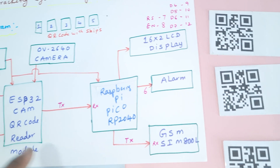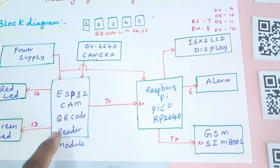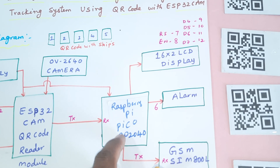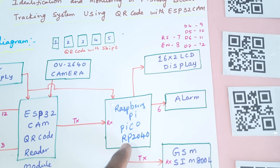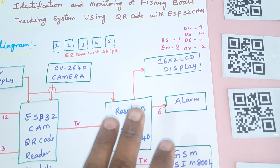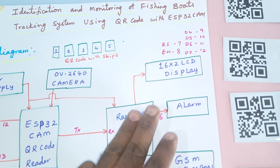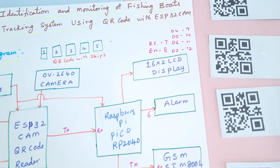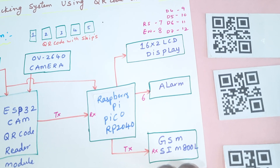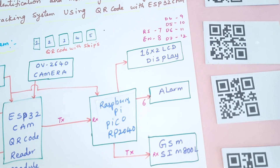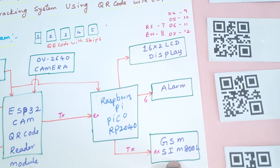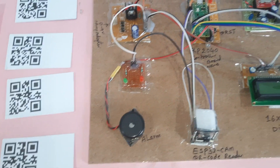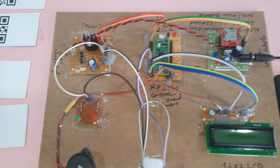The QR code reader will read the data and send the QR code name to the Raspberry Pi Pico board, which will check the data. Each person is allowed to enter into the sea three times monthly. If they attempt a fourth time, it will send an SMS alert to a predefined caretaker or person. If a wrong card is scanned, it will also send an SMS alert.